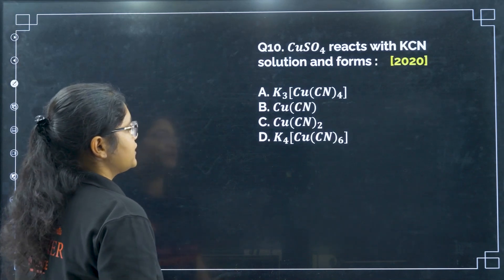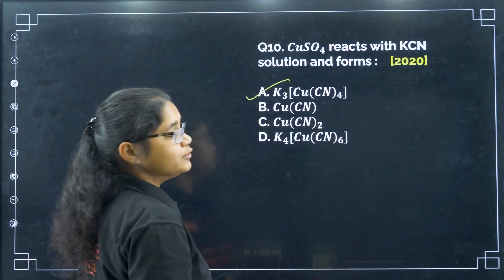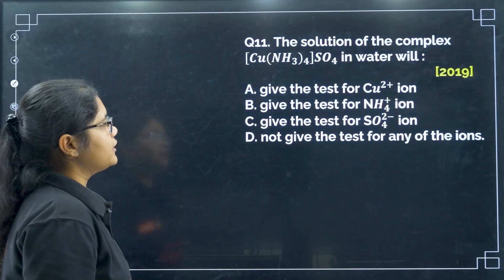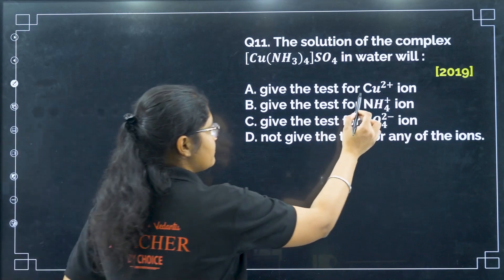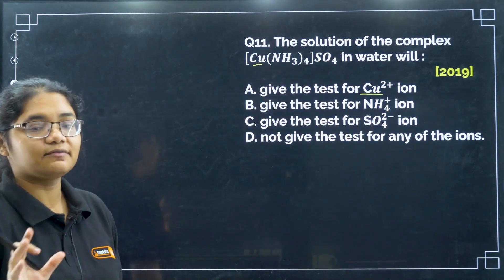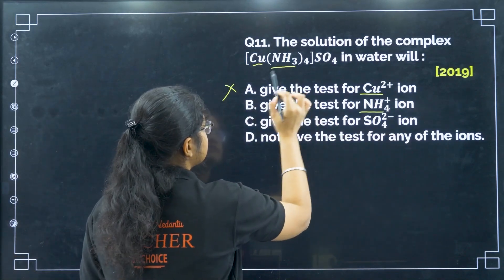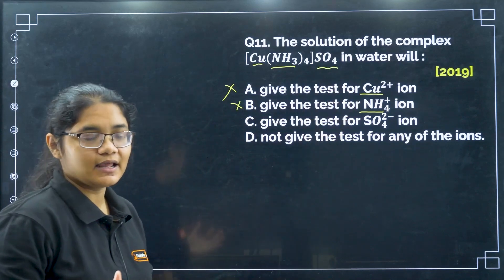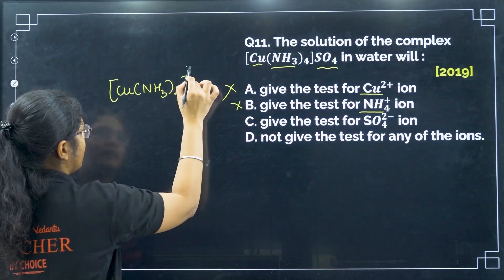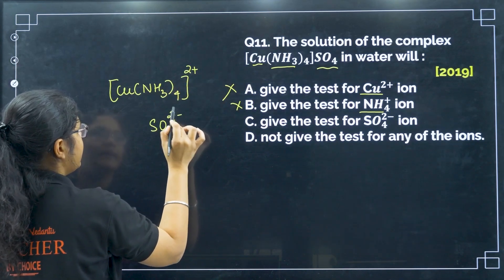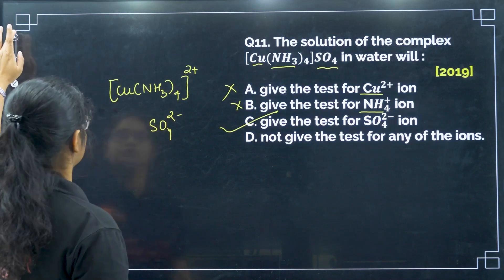Next, CuSO4 reacts with KCN solution to form K3[Cu(CN)4] — you should know this reaction. Next, the solution of the complex [Cu(NH3)4]SO4 in water: copper is part of the complex so Cu2+ ions will not be present separately, and NH4+ is not formed. Sulfate ions are separately present when dissolved in water, so the test for SO4 2− will be given — option C.